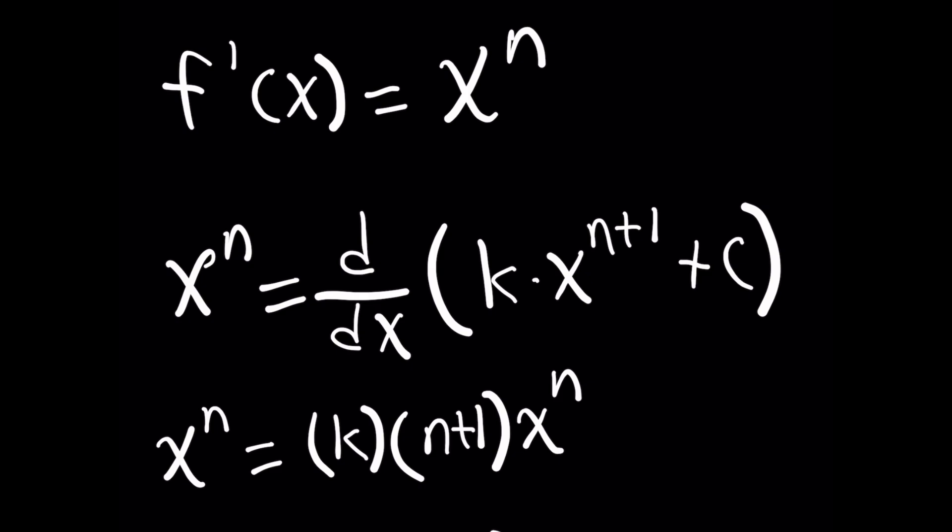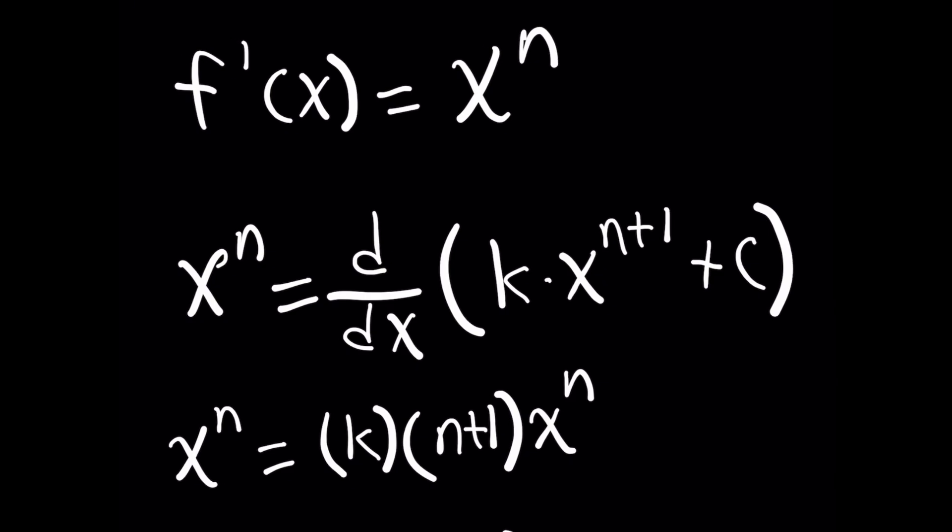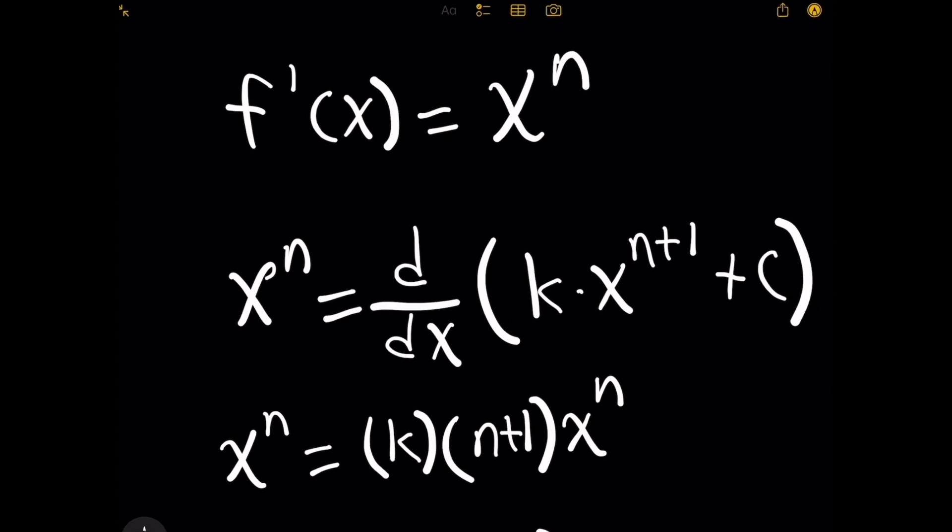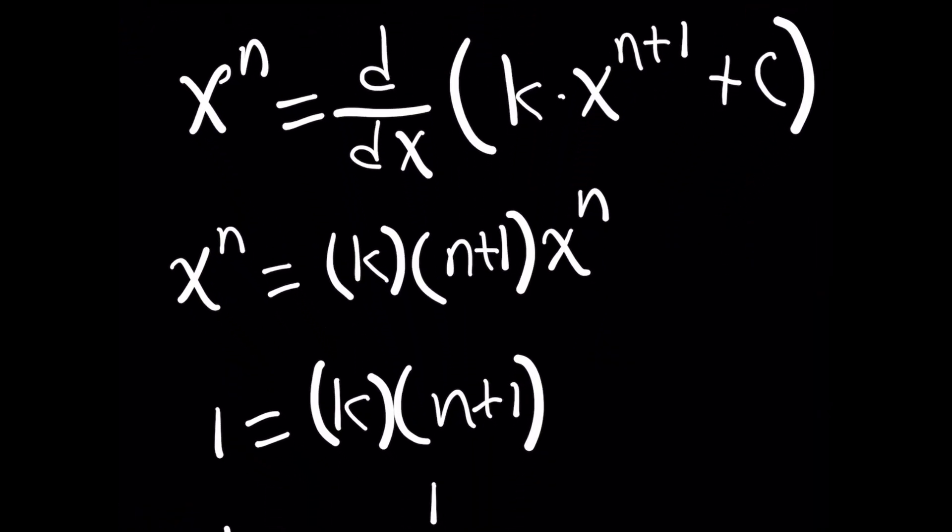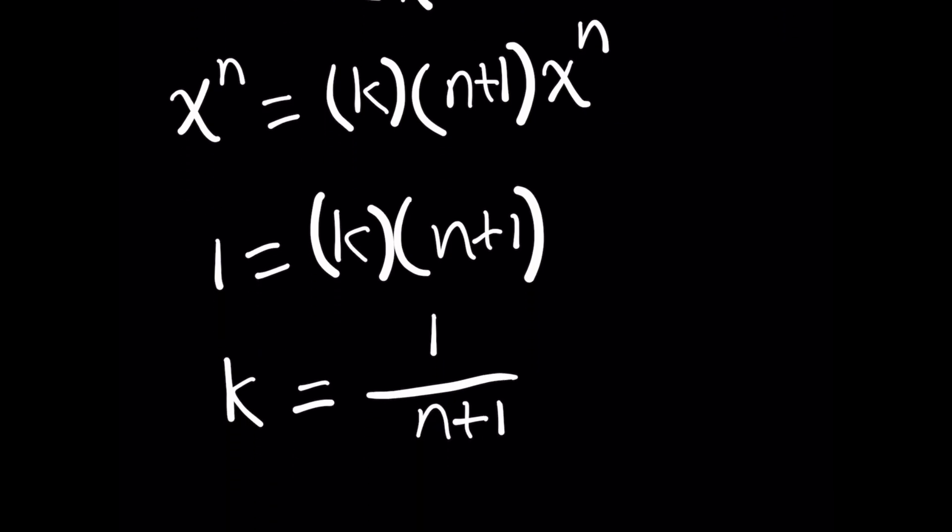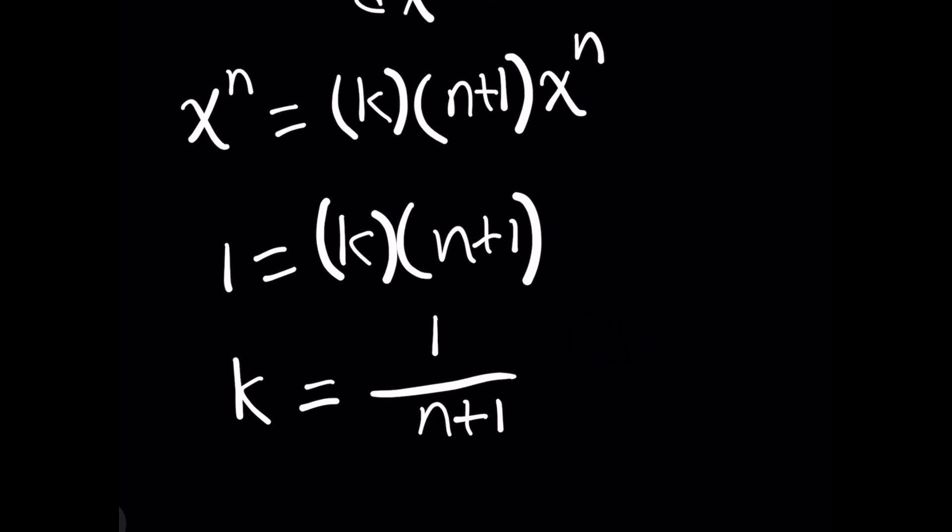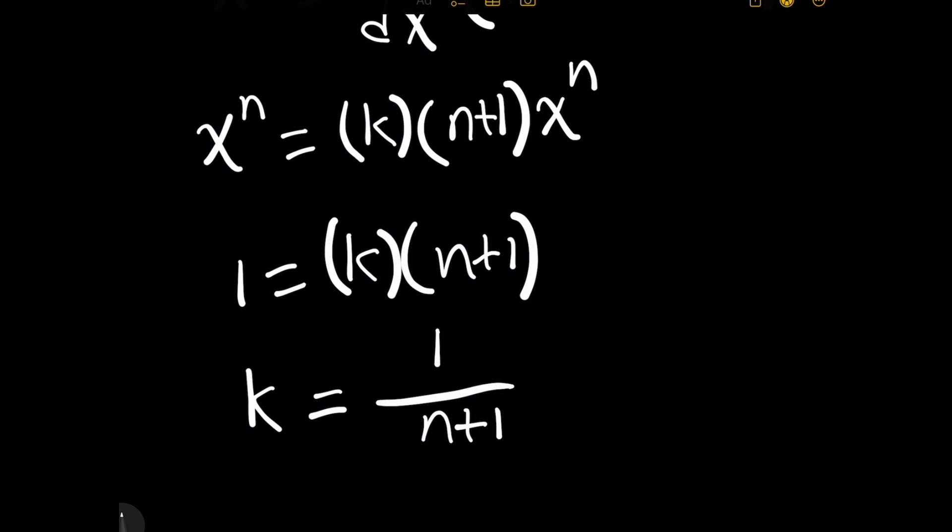And what's really cool is that this is really easy to solve for k because notice on the left-hand side, x to the n is the same as 1 times x to the n. So in other words, it must be true that 1 equals k times n plus 1. And when you solve for k, this will give you a result where k equals 1 over n plus 1. So in other words, whenever you integrate x to the n in your answer, based on what n is, the constant you'll end up with in front of that final x to the n plus 1 polynomial will be 1 over n plus 1.